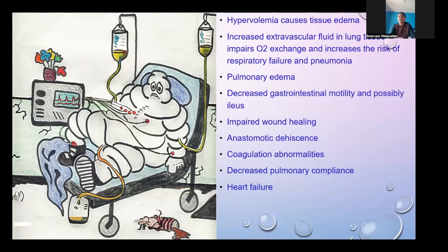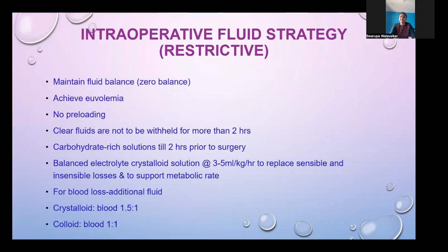Hypervolemia causes tissue edema. Increased extravascular fluid in lung tissue impairs oxygen exchange and raises the risk of respiratory failure and pneumonia. It also impairs GI motility, potentially causing ileus, impaired wound healing, anastomotic dehiscence, coagulation abnormalities due to dilution of clotting factors, decreased pulmonary compliance, and ultimately heart failure.